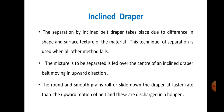Starting with the inclined draper belt separator — separation by the inclined belt draper takes place due to difference in shape and surface texture of the material. In the previous lecture we studied magnetic separator, which separates material on the basis of surface texture and thickness properties of the different constituents. In the same manner, this inclined draper belt separates material due to difference in shape and surface texture.